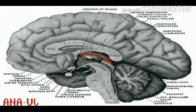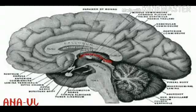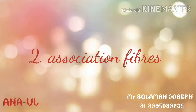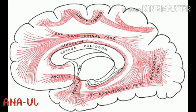Next we are going to learn about the habenular commissure. The habenular commissure is a small bundle of nerve fibers that crosses the midline in the superior stalk of the pineal gland. The commissure is associated with the habenular nucleus. Next we are going to learn about association fibers. These fibers connect the various cortical regions of a cerebral hemisphere and permit the cortex to function as a coordinated whole.